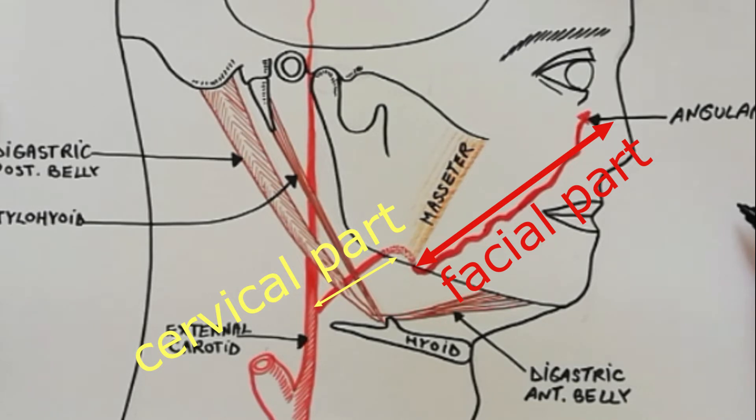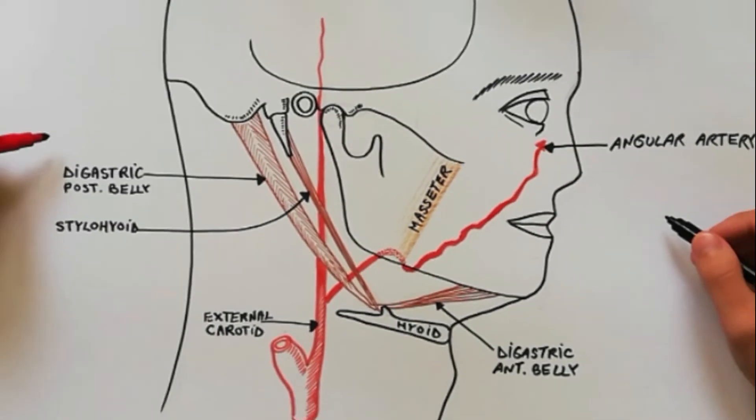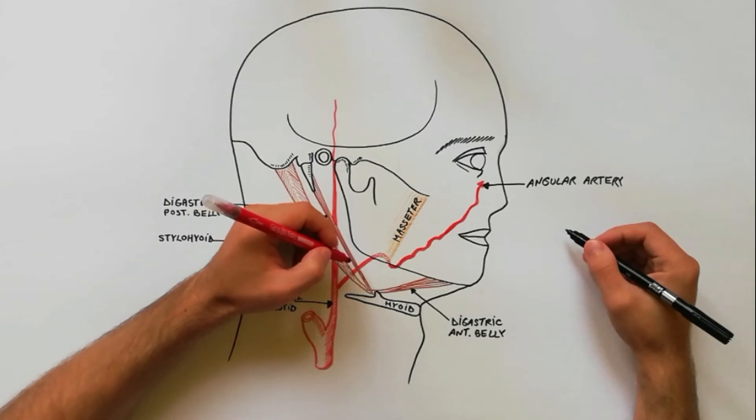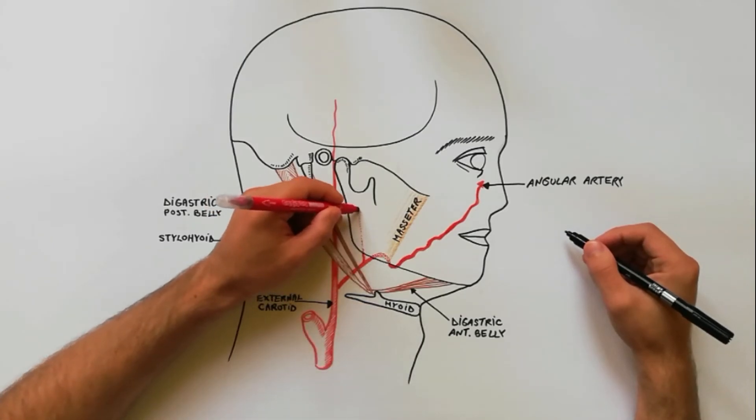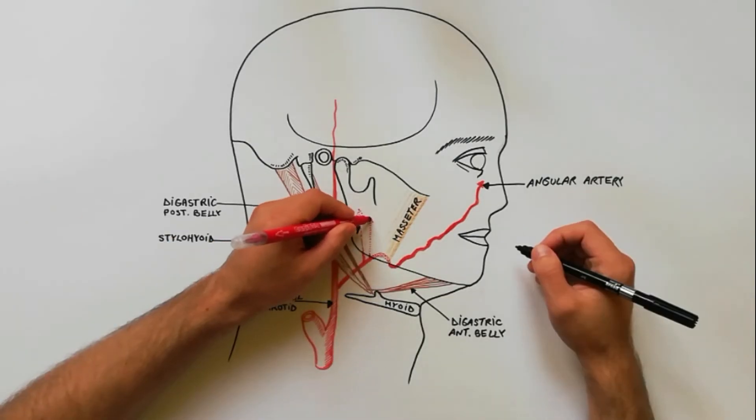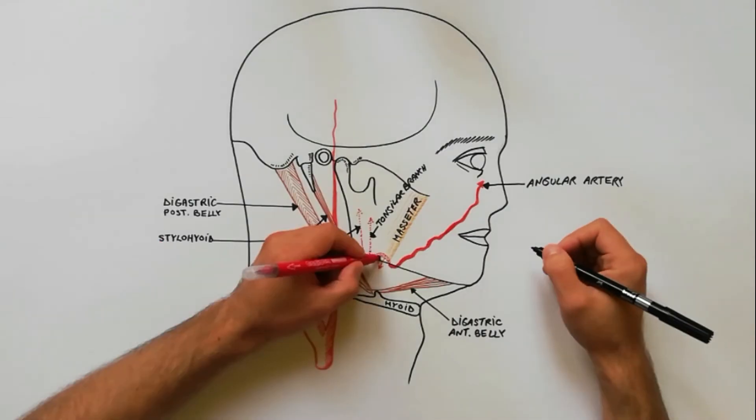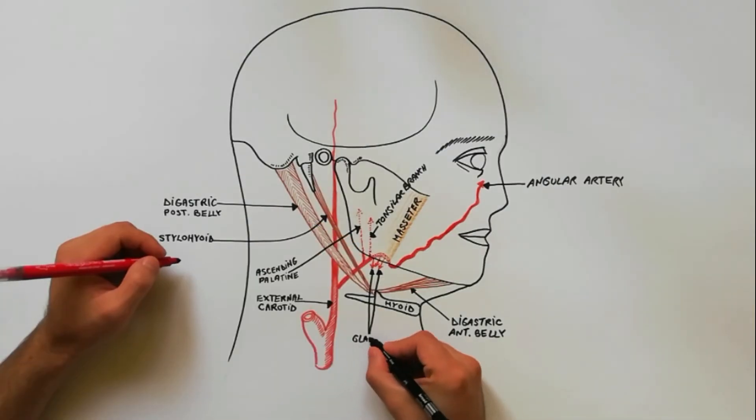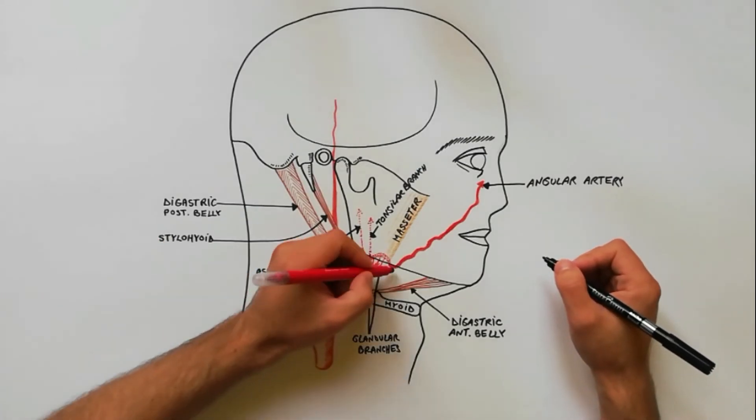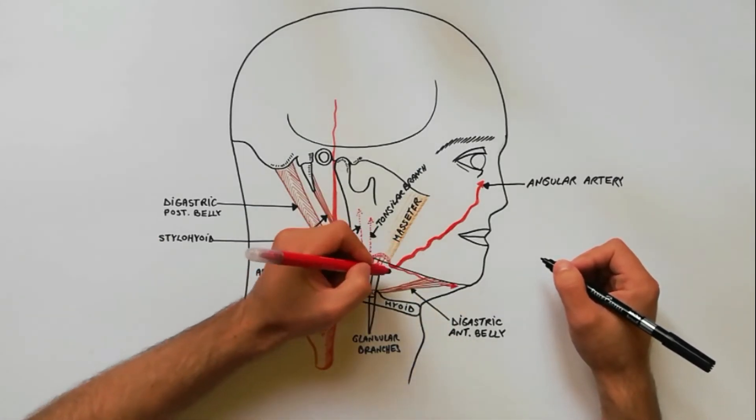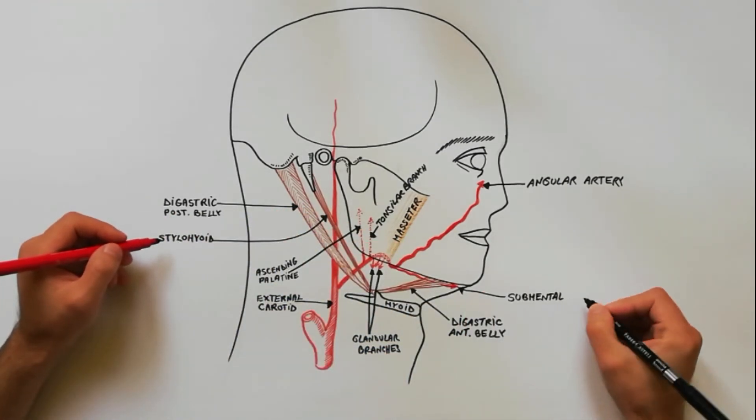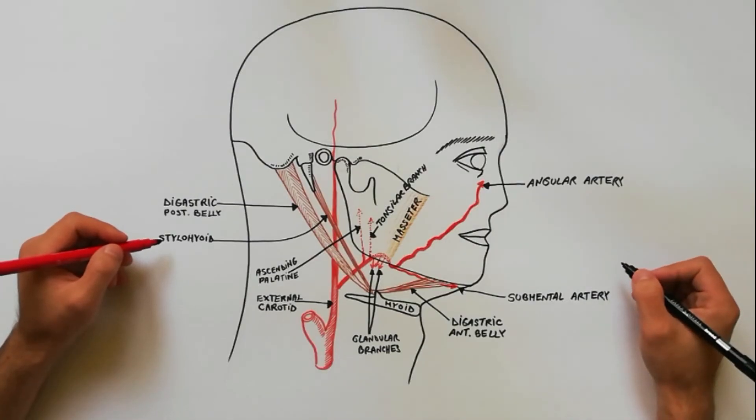Each of these two parts gives four branches. From the cervical part arise the ascending palatine artery, the tonsillar branch for the palatine tonsil, glandular branches for the submandibular gland, and the submental artery, which is the largest cervical branch and runs forward just below the body of mandible beneath the anterior belly of digastric.